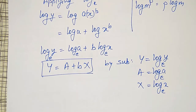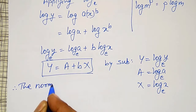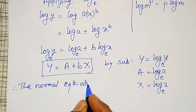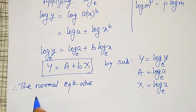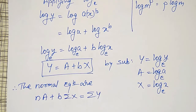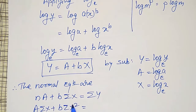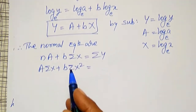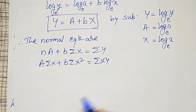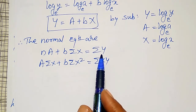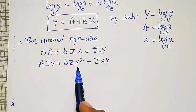The normal equations are: N·A + b·ΣX = ΣY, and A·ΣX + b·ΣX² = ΣXY. Using these summations, I want to prepare a table calculating summation of capital X, capital Y, capital XY, and capital X squared. Capital X equals ln(x) and capital Y equals ln(y) in the calculator.